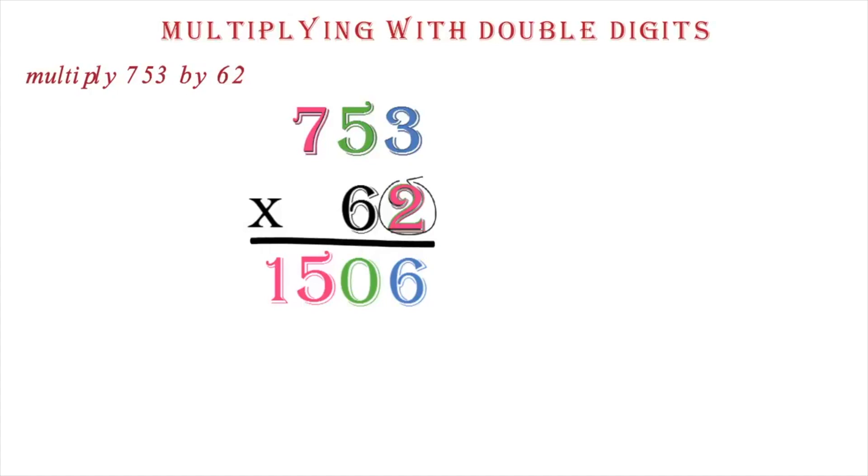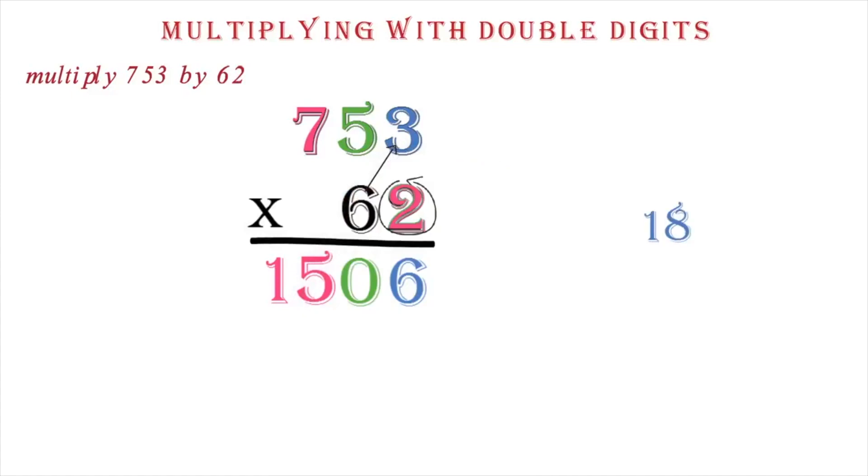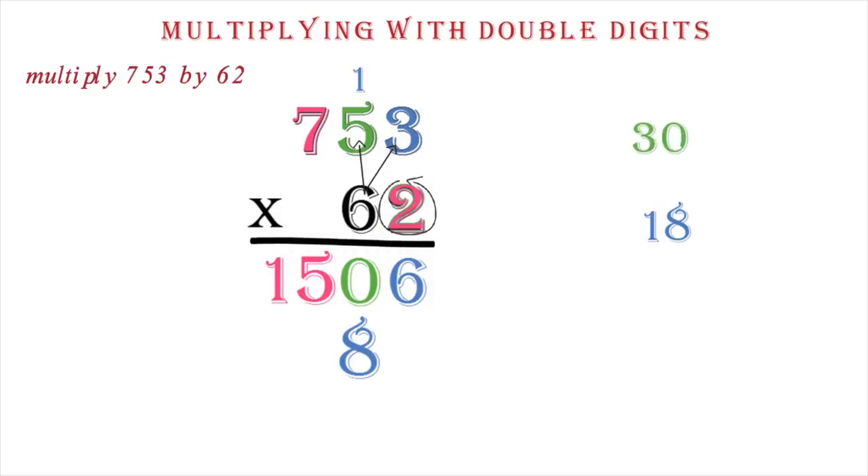Next, we work on the 6. We multiply each digit in the 753 by 6. We do 3 by 6 to get 18. This is a double digit, so we have to keep the 8 and carry the 1. Now, since this 6 is in the tens place, we place its value from here, under the 6. We write the 8 down. We then multiply the 5 by 6 to get 30. Don't forget to add the 1. We have a double digit, so we keep the 1 and carry the 3. Next, we multiply the 7 by the 6 to get 42. We add our 3 to get 45.